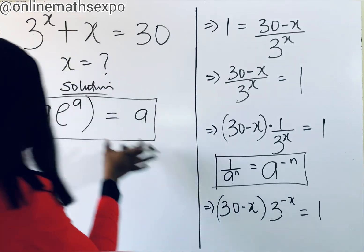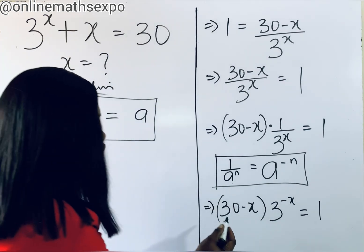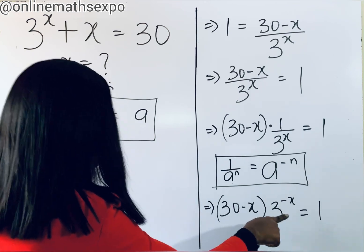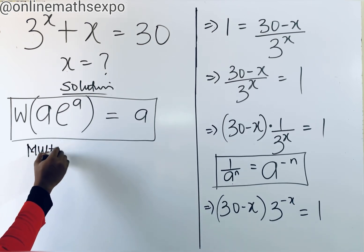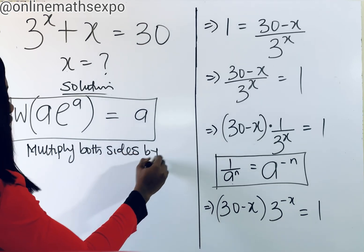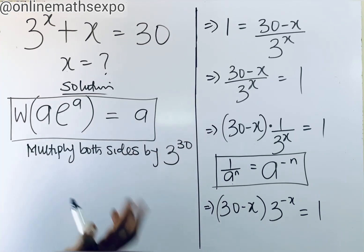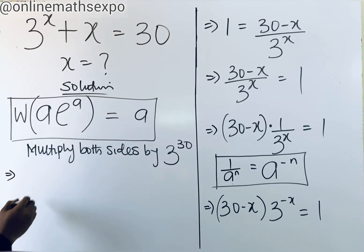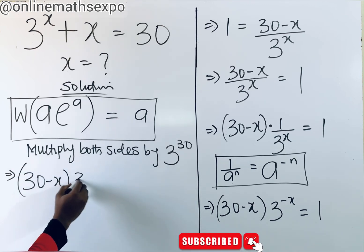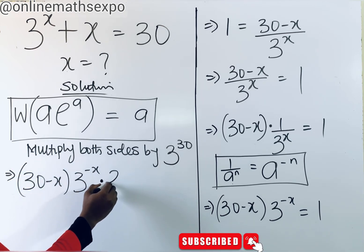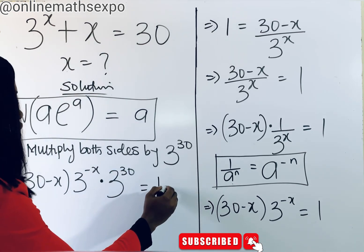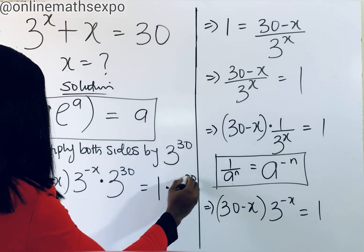Because we have 30 and the base is 3, we are going to multiply both sides by 3 to the power of 30. So we have 30 minus x, multiplied by 3 to the power of negative x, multiplied by 3 to the power of 30, equal to 1 multiplied by 3 to the power of 30.